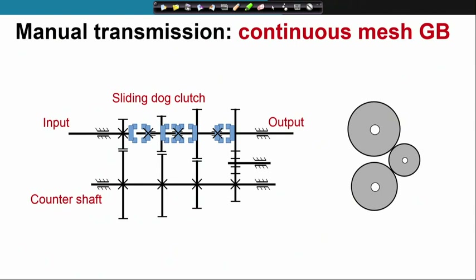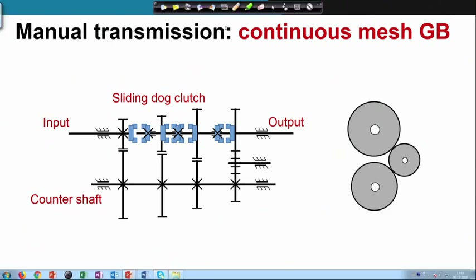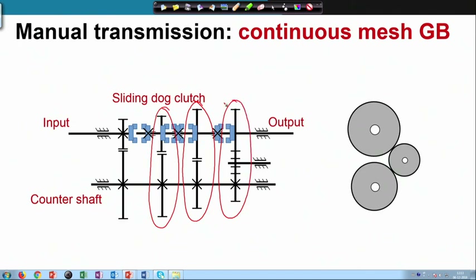Let us now look at the continuous mesh gear box. In this gear box, the gears are always in mesh as shown. This is the input shaft, this is the counter shaft. Here there is a pair of meshing gears, and there are three continuously meshing gear pairs.